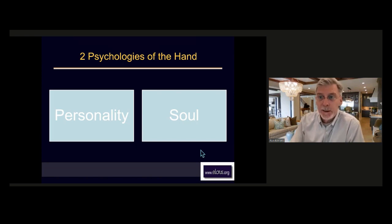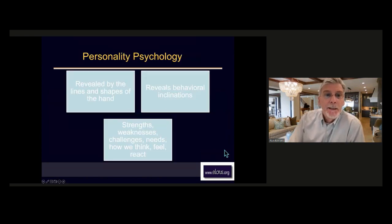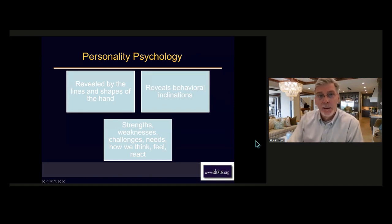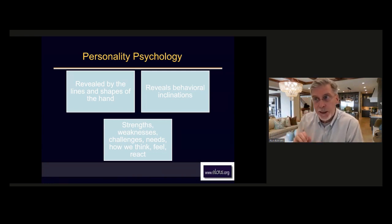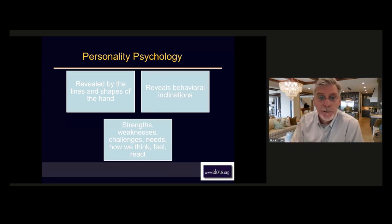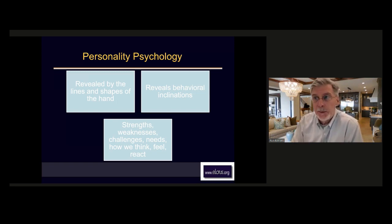We've been spending most of our time with personality psychology, which is revealed by the lines and the shapes in our hand. That's all dynamic — it can change as our thought process changes. Lines can change direction, get breaks in them, you can create new lines, and lines that were there can start to disappear as we clear up issues in our life. It gives us an overall feel of a person's personality, their strengths, weaknesses, challenges, what their needs are in life — how we think, feel, and react.